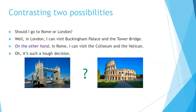Let's look at this in more detail — contrasting two possibilities or options. Should I go to Rome or London? Well, in London I can visit Buckingham Palace and Tower Bridge. On the other hand, in Rome I can visit the Colosseum and the Vatican. Oh, it's such a tough decision!